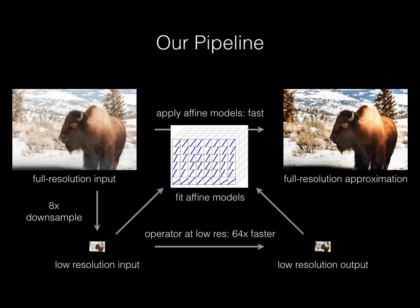Concretely, the final step involves taking each pixel, trilinearly interpolating a 3x4 matrix out of the 3D grid, and multiplying it by RGB1. The last step is extremely efficient on hardware such as GPUs, which have texture interpolation units.